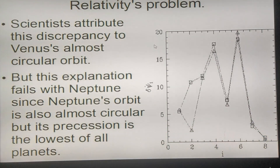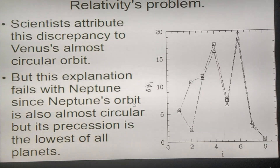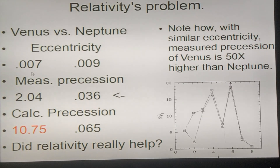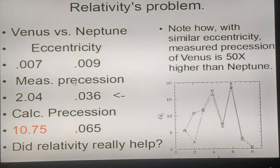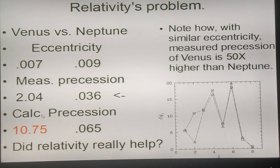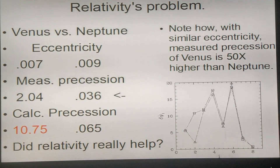Scientists attribute this discrepancy to Venus having an almost circular orbit. But this explanation fails with Neptune, because Neptune's orbit is also almost perfectly circular, yet Neptune's precession is the lowest of all the planets. Venus has an eccentricity of 0.007 and Neptune 0.009 — both nearly perfect circles. But Venus's measured precession is 2.04, while Neptune's is only 0.036 — almost 50 times lower. And if you calculate it, for Venus you get 10.75, and for Neptune relativity doubles it. So did relativity really help?